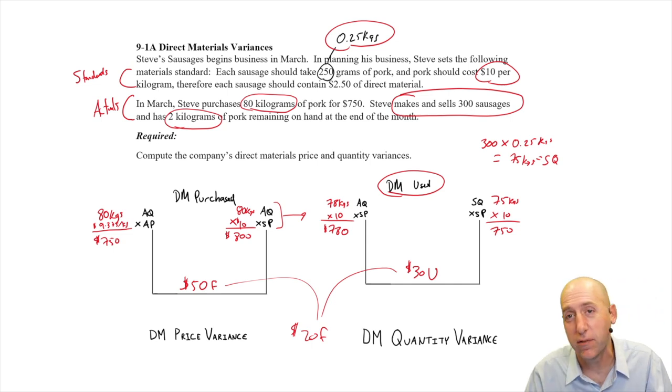But so even though we would have a positive variance and Steve should be very pleased overall with this result, he might want to investigate this $30 unfavorable variance. Maybe there were mistakes made that could be eliminated in the future and he could have made even more profit. This could have gone even better. As it was though, this is a favorable overall variance. They saved enough money to overcome the fact that they were a little bit wasteful or they used more material than expected.